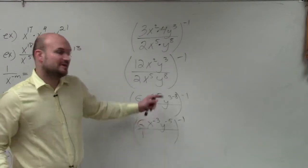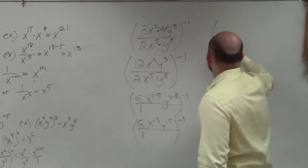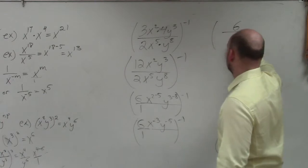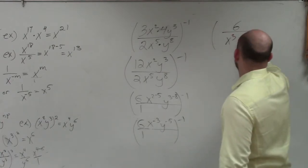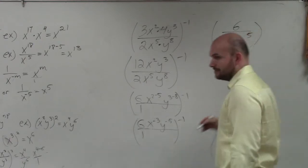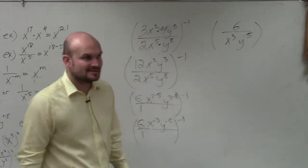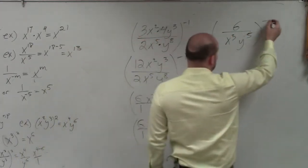So, now I've got to make them positive. Now I'm going to rewrite them in the denominator. So, I have 6 over x cubed y to the 5th. Right? Yes? And this is all raised to the negative first power.